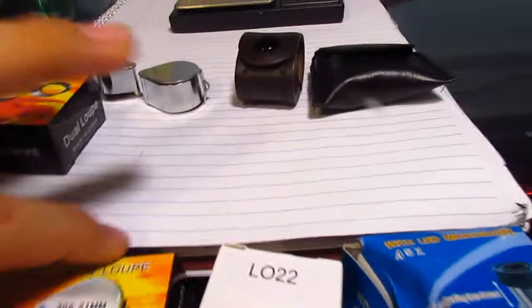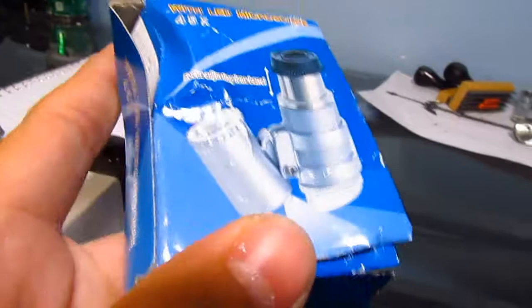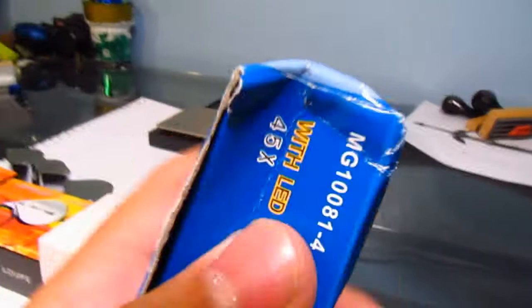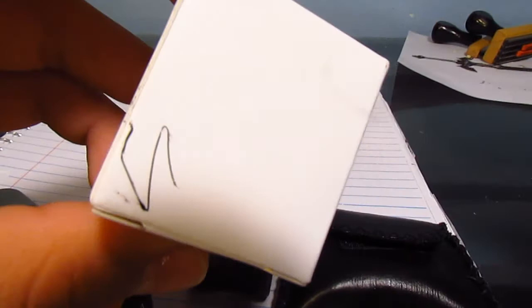These are their respective boxes. This comes with a little pouch in this box. It says with LED microscope 45 times, definitely not 45 times. Focus adjusting barrel, made in China as expected. Got a little damage during shipping but that's not a big deal. Then we have this guy here which comes in a plain white box. It says LO 22.